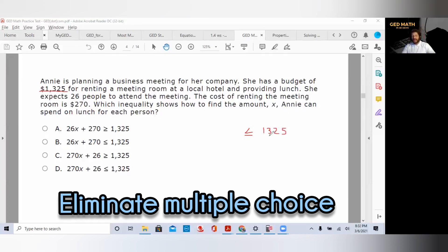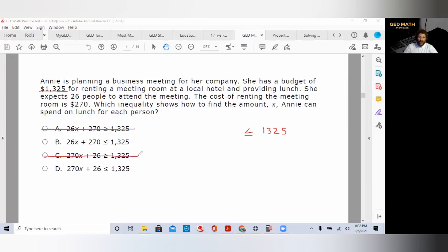You must identify what you know. She has a budget of $1,325, so she can't spend more than that. It's less than or equal to $1,325. Whatever it costs has to be less than or equal to $1,325. Right away we know it's not A or C, so you eliminated two answers. Given 26 people to attend the meeting and the room is $270, x is how much they can spend on lunch. How many people? 26 people. Each person has lunch, so that's 26x. That's a cost. The additional cost is $270. The inequality, we don't even have to solve it, we just have to set it up. For many questions like that on the GED, you just have to set it up.